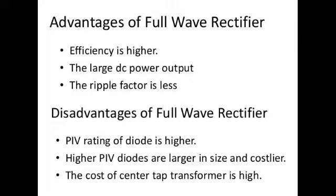Disadvantages of full wave rectifier: the PIV rating of the diode is higher. Higher PIV diodes are large in size and cost. The cost of the center tap transformer is high.